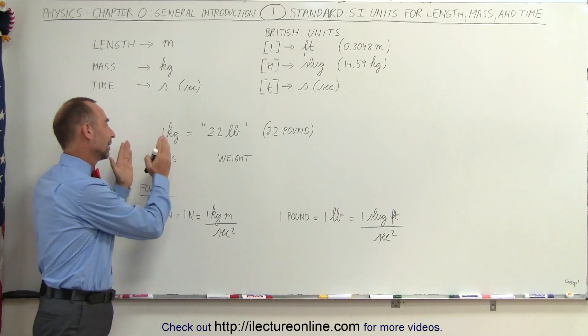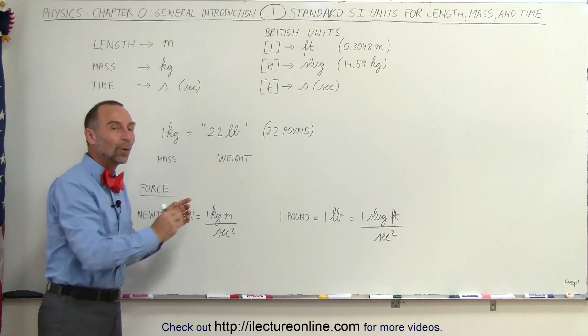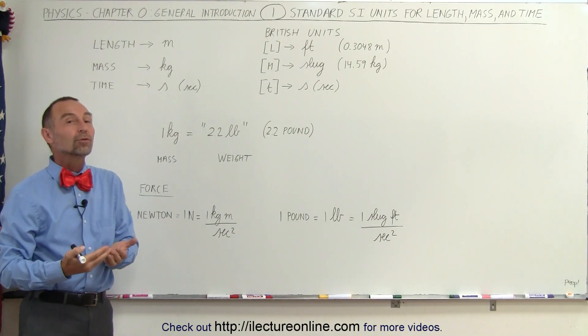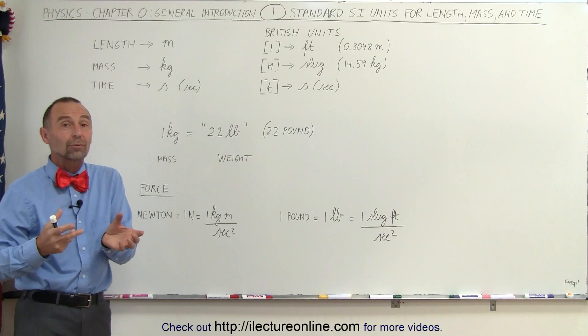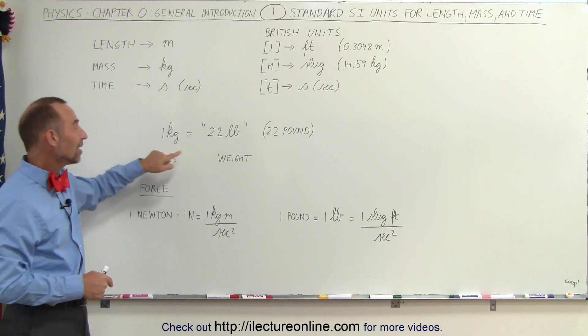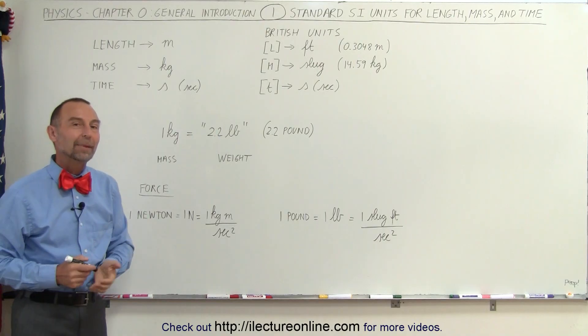Again, remember that kilogram is mass and pounds is weight, which you cannot really equate. But for the practicality, when you go into a grocery store and you want to buy one kilogram of something but you're in the United States, you will order 2.2 pounds of it and you'll get the equivalent of one kilogram anywhere else.